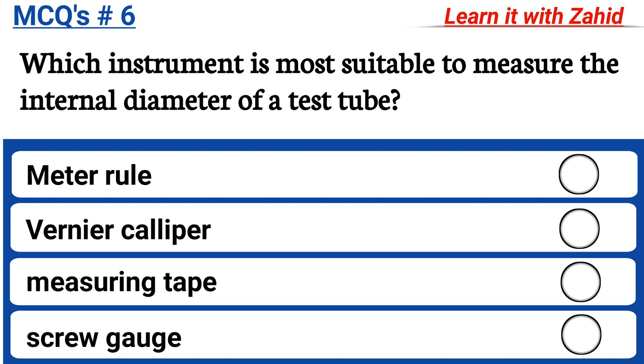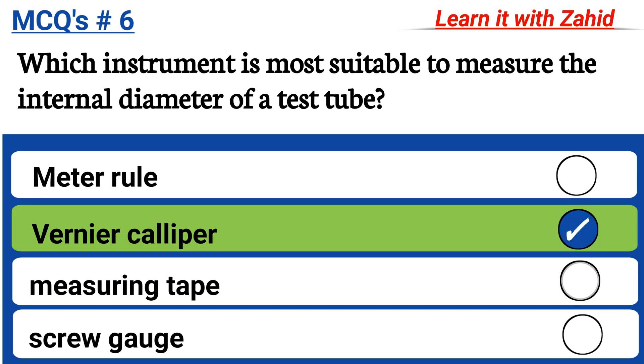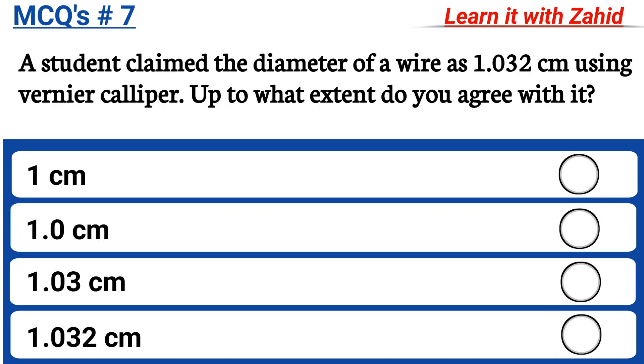Which instrument is more suitable to measure the internal diameter of a test tube? Meter rule, Vernier caliper, measuring tape, screw gauge. And the correct answer is Vernier caliper. A student claimed that the diameter of a wire is 1.032 cm using